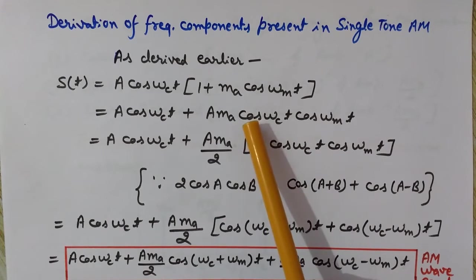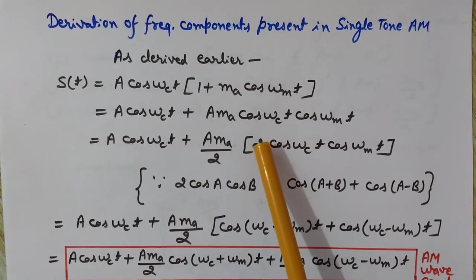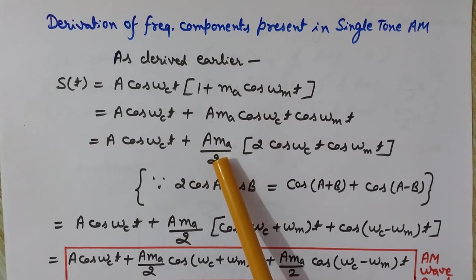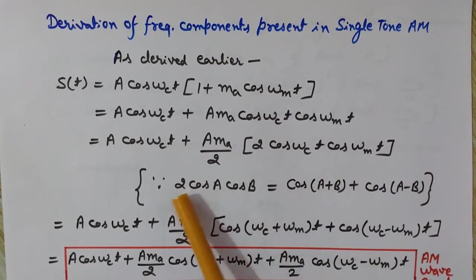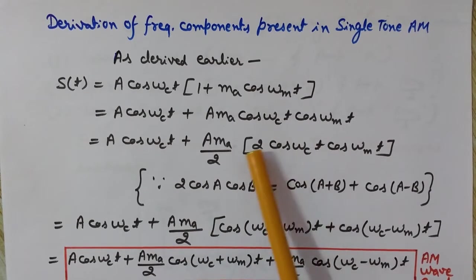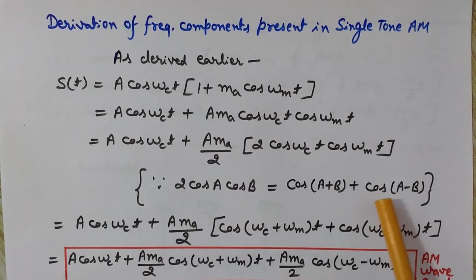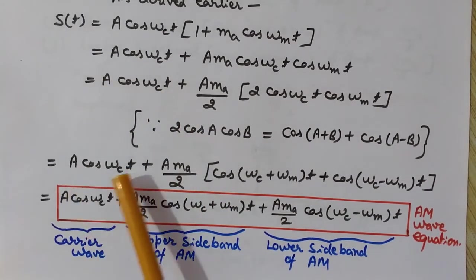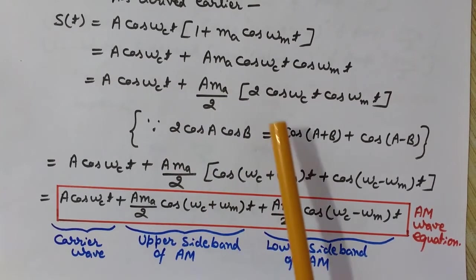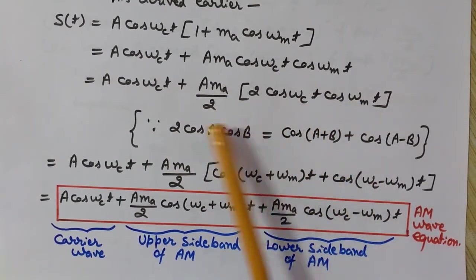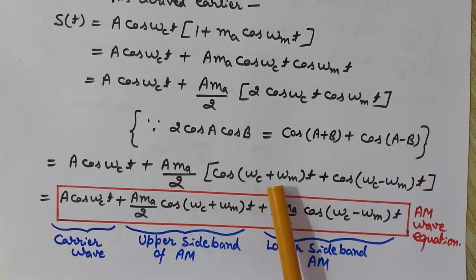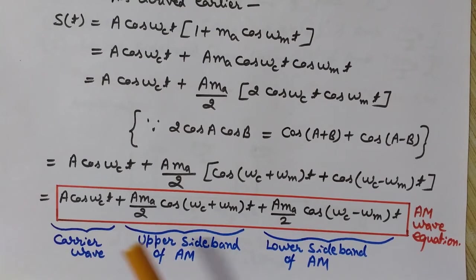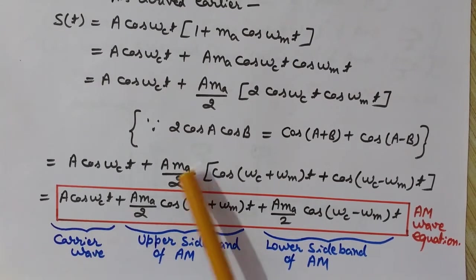To apply the formula, multiply and divide the product cos(ωc·t)·cos(ωm·t) by 2. This gives a 2cosAcosB format, which can be replaced by cos(A+B) + cos(A−B). So we get s(t) = A·cos(ωc·t) + (A·ma/2)·[cos(ωc+ωm)t + cos(ωc−ωm)t].